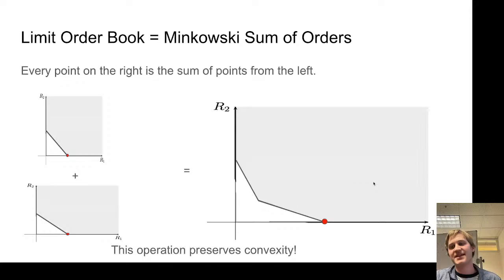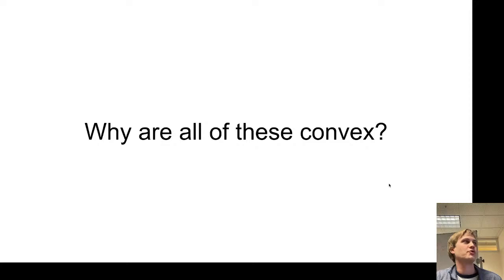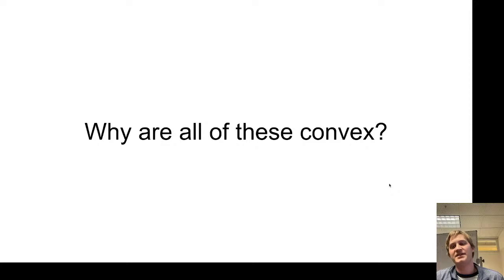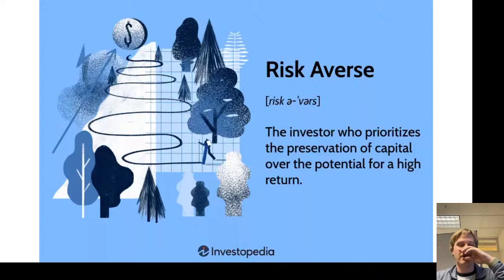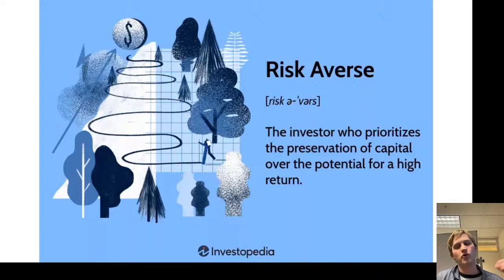We have more justification that pretty much every constant function market maker we come across is going to be convex. To answer this from a more financial perspective: why did all of these turn out to be convex? Did no one ever try to make a non-convex one? The answer involves risk aversion. In most cases in economics, you're going to prefer a situation where you are not taking a gamble over one where you are.